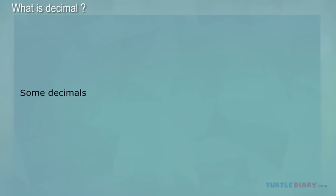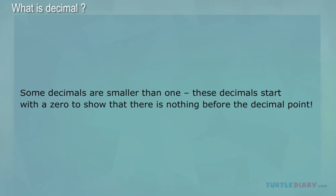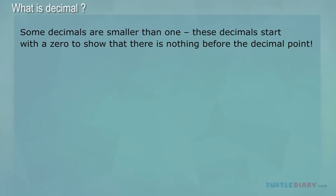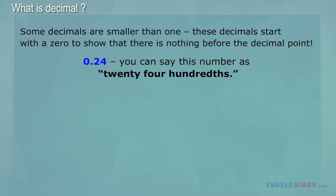Some decimals are smaller than 1. These decimals start with a zero to show that there is nothing before the decimal point. For example, 0.24. You can say this number as 24 hundredths.